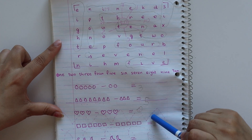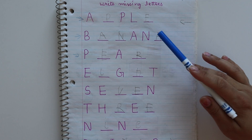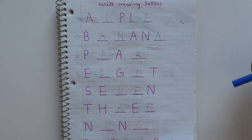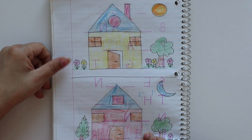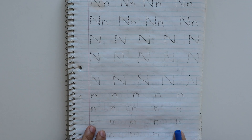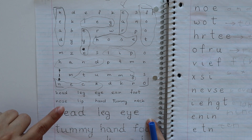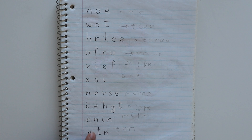Then we have another subtraction worksheet. I gave spellings that Jiya had learned for revision. Here I gave a missing letter worksheet with fruit names and number names, and also the spelling of Jiya's name. We have one more find-the-difference worksheet with 8 differences. Then letter N writing practice, one more word search for parts of the body, and unscramble the number names — Jiya wrote the right spelling.